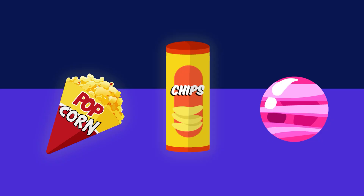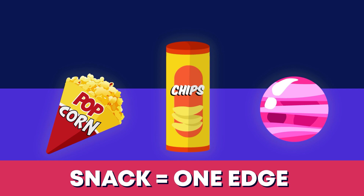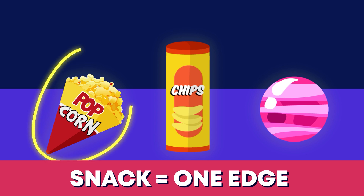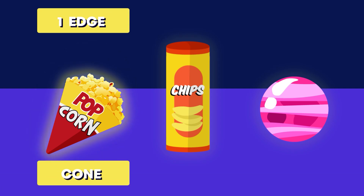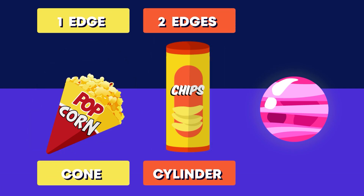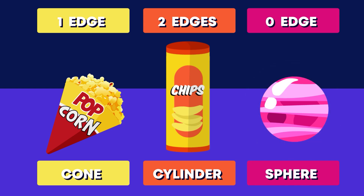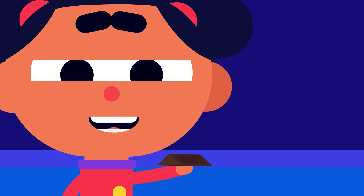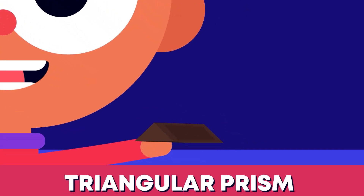If I want a snack with only one edge, which other snack should I pick? The popcorn — well done! Because the cone shape has one edge, a cylinder has two edges, and the sphere has none.